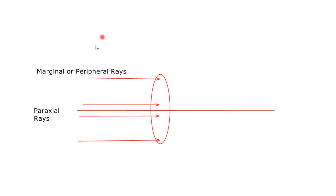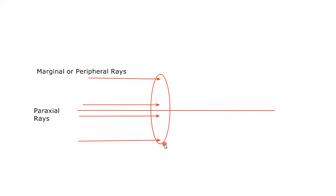Now let us try to understand what are marginal and paraxial rays. This is a convex lens that I have shown, and this is the principal axis at the center. Rays of incident light which are closer to the axis are called paraxial rays, and rays of light which are further away from the principal axis — towards the boundary or towards the end of the lens — are called marginal or peripheral rays.